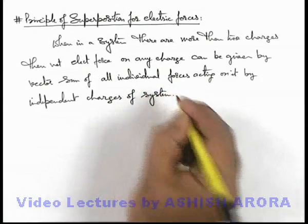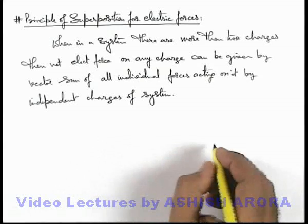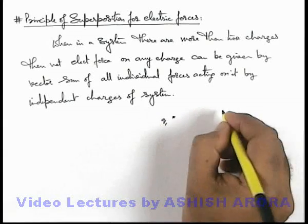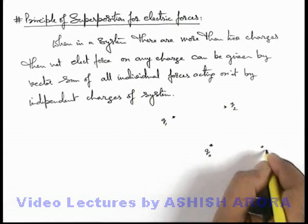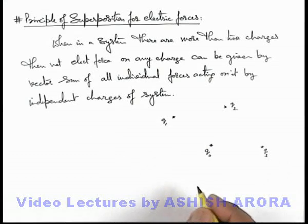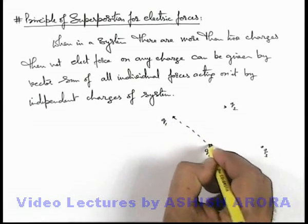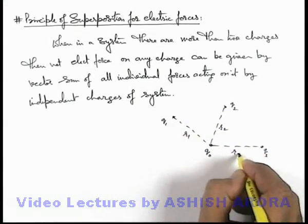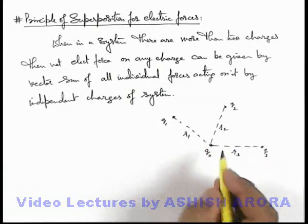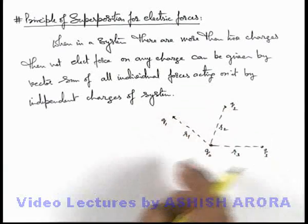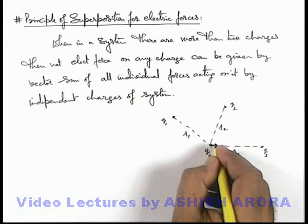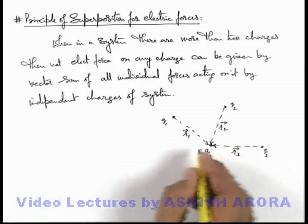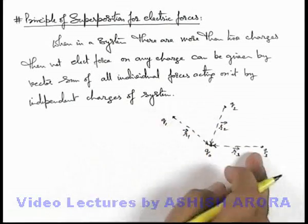This is quite an important rule. Let's discuss it with the help of an application. Say we are having a charge q-naught, and in its surrounding there are a few charges q1, q2, and q3 placed. Say q1 is located at a distance r1, q2 is at a distance r2, and q3 is at a distance r3. If we define these distances in terms of position vectors, then r1, r2, and r3 are the position vectors of q-naught with respect to the 3 charges.